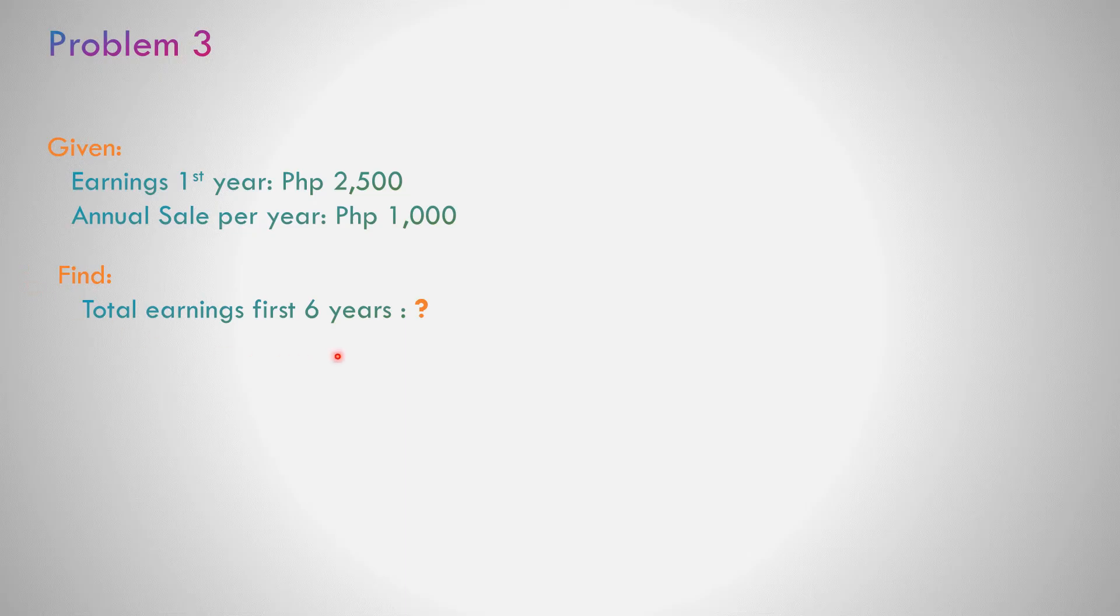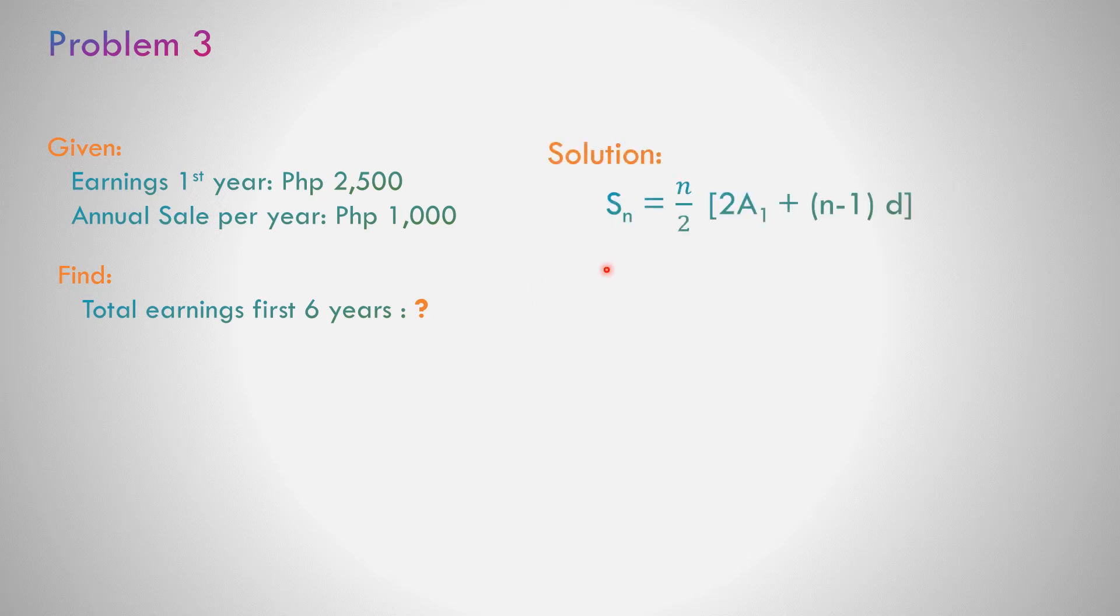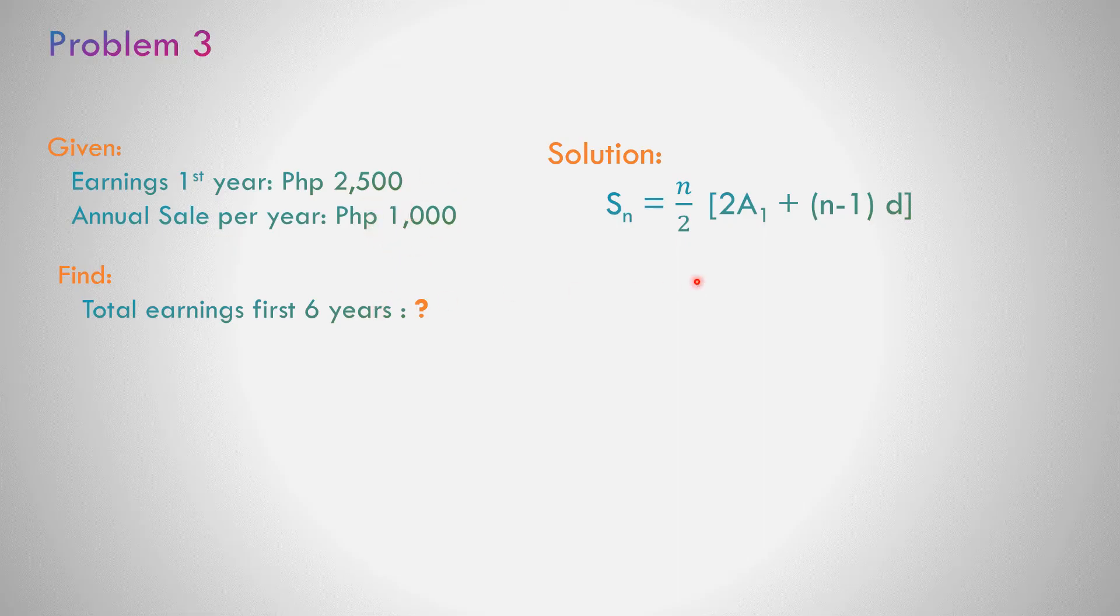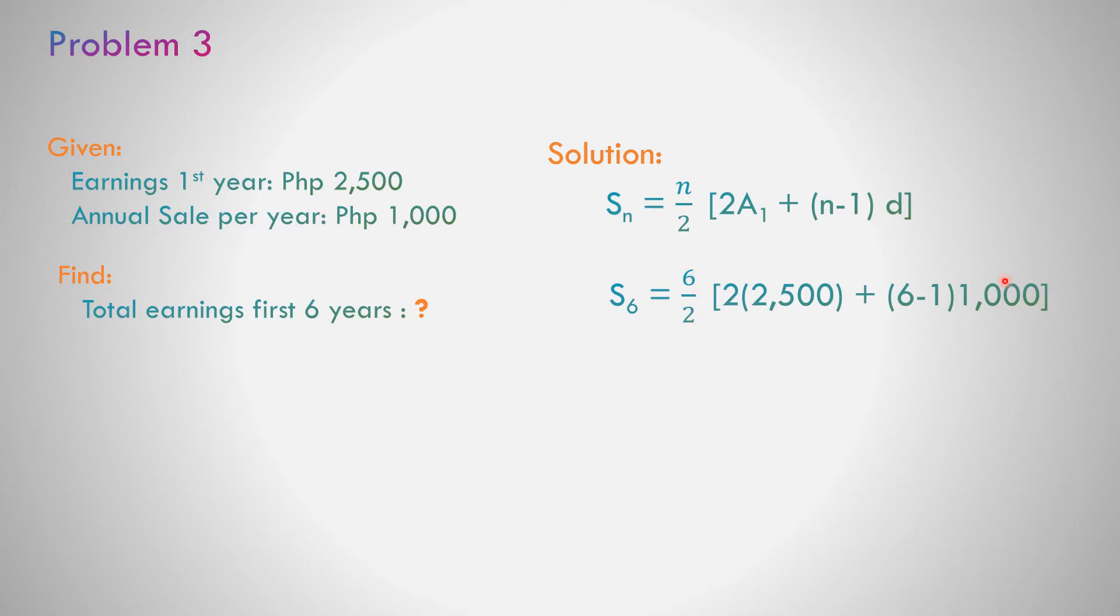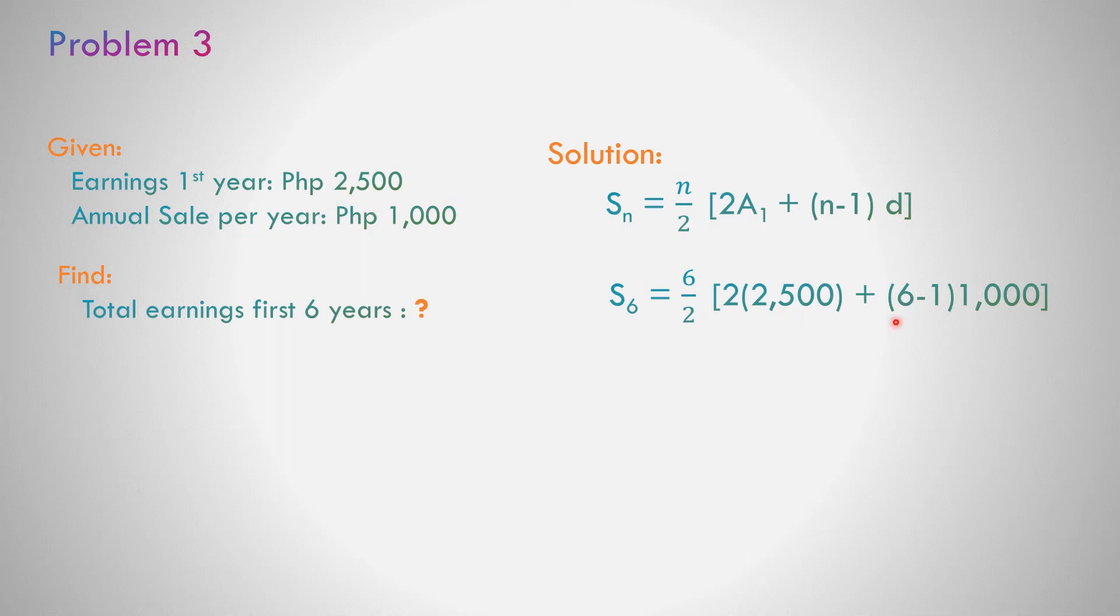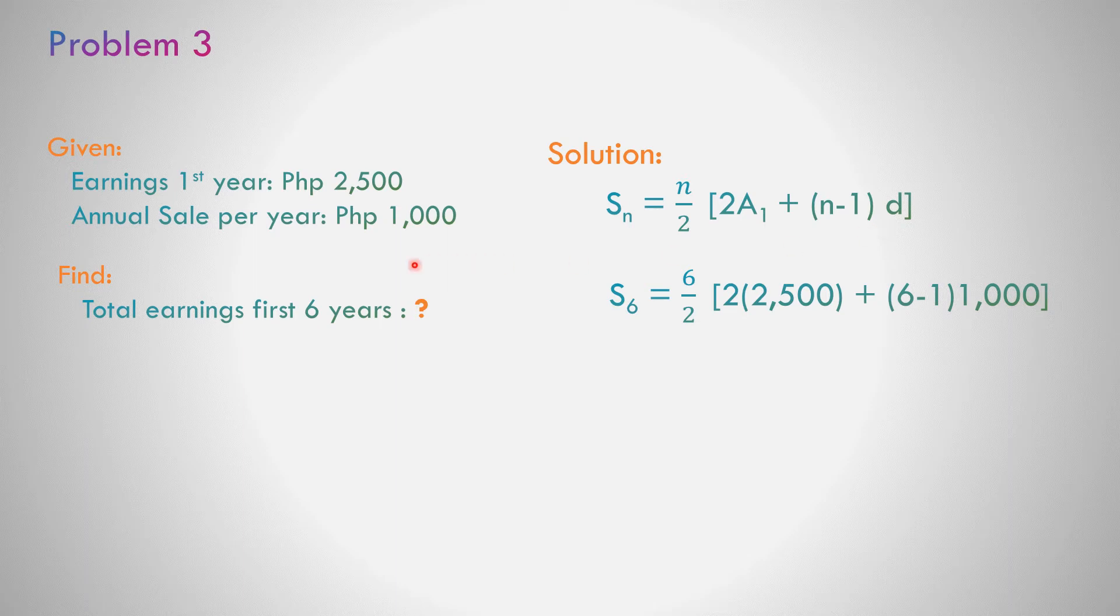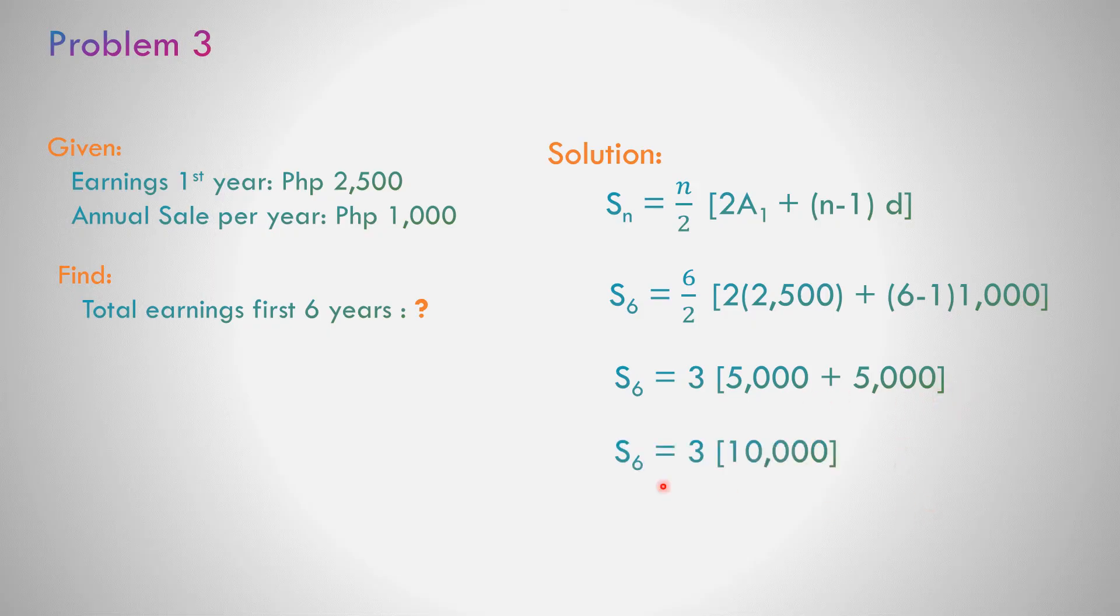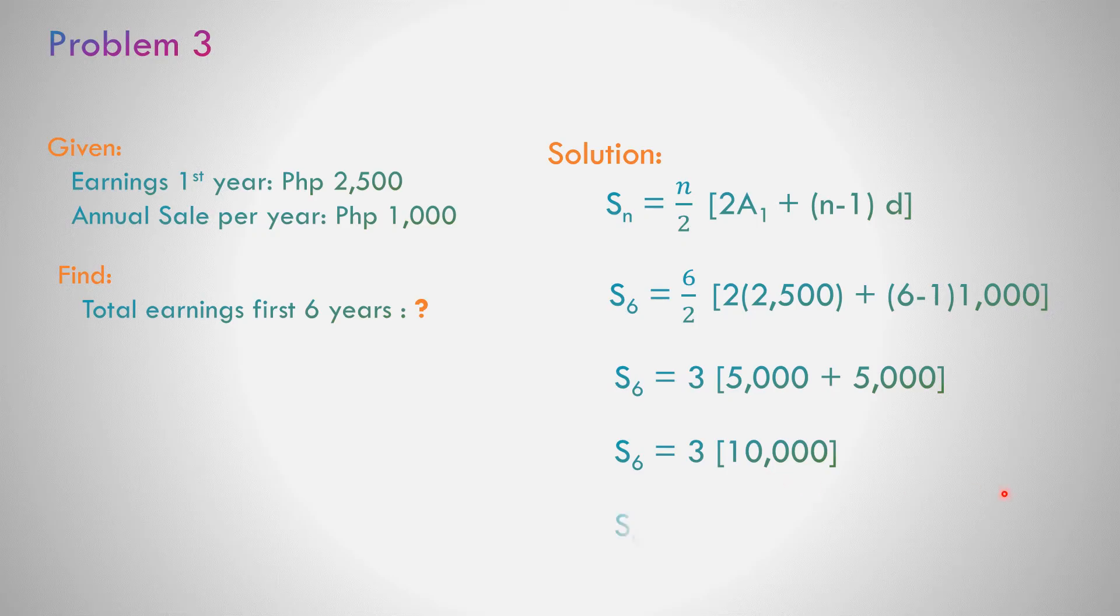We need to identify the total earnings for the first 6 years, so we use the formula for the arithmetic series: S sub n equals n over 2 times the quantity 2 A sub 1 plus n minus 1 times d. The first term is 2,500, number of terms is 6, common difference is 1,000. That becomes 6 divided by 2 times the quantity 2 times 2,500 plus 6 minus 1 times 1,000. This becomes 3 times 5,000 plus 5 times 1,000. 5,000 plus 5,000 equals 10,000. So 3 times 10,000 equals 30,000.